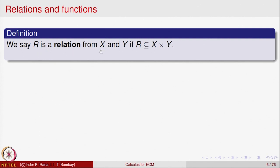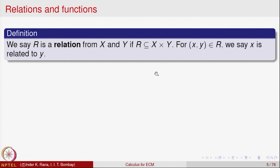We say R is a relation from X to Y if R is a subset of X cross Y. A relation from X to Y means between elements of X and elements of Y — with order — and it is a subset of X cross Y. All subsets of X cross Y are called relations. If an ordered pair (x, y) belongs to R, we say x is related to y.